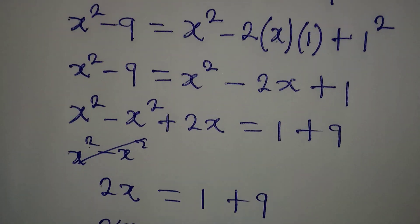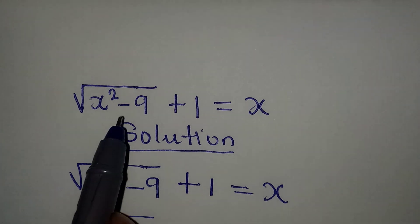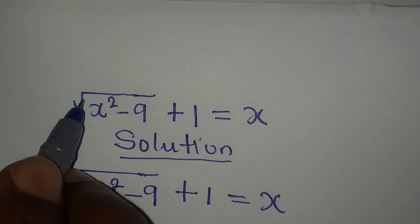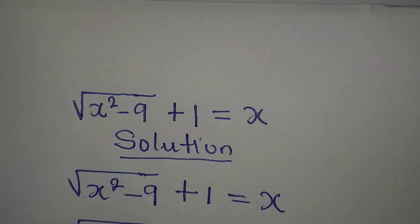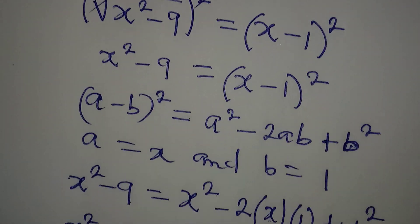But looking at this, you will be thinking this should have 2 solutions, knowing that we have power of 2. Okay? This square root will counter this power. So this is as good as a linear equation, right?